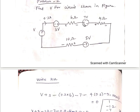This is from rise to drop, so minus 7. Then minus 4 times 0.2. Again, this voltage source is dropping, so minus 5, then minus 10 times 0.2 equals 0.